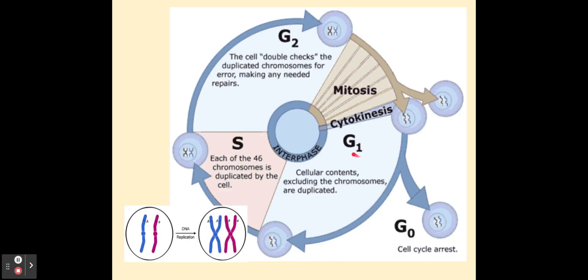This shows you G1, where the cell is growing and organelles are being duplicated. It is during S-phase that the chromosomes are duplicated — prior to S-phase we see single chromosomes, and after S-phase we see the sister chromatids attached at the centromere. In G2, the duplicated chromosomes get checked for errors, but throughout all of them the cell is growing. So G1, S, and G2 come before mitosis, and all three are part of interphase, where the cell is 90% of the time.